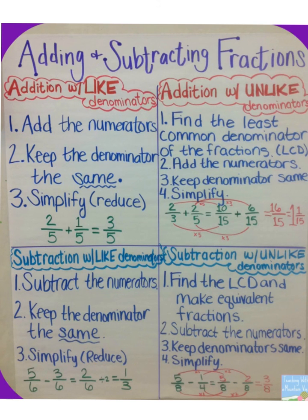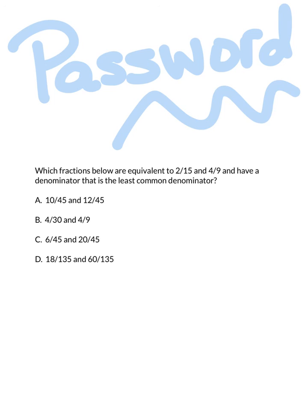Now let's take our journals out and copy down our notes for this lesson. Remember you can push pause on the video to jot down all the notes. Now let's take a look at our password for tonight: Which fractions below are equivalent to two-fifteenths and four-ninths and have a denominator that is the least common denominator? The choices are ten forty-fifths and twelve forty-fifths; four-thirtieths and four-ninths; six forty-fifths and twenty forty-fifths; eighteen one-hundred-thirty-fifths and sixty one-hundred-thirty-fifths.